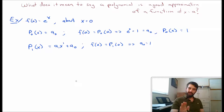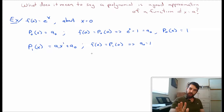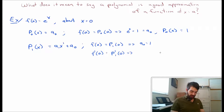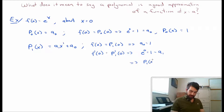But that doesn't tell me what a1 is. So now I demand something else: not only are the functions equal at 0, but the first derivatives are also equal at 0. The first derivative of p1 is just a1, and the derivative of e to the x is e to the x, evaluated at 0 gives 1. So a1 equals 1, and my polynomial p1 of x equals 1 times x plus 1.